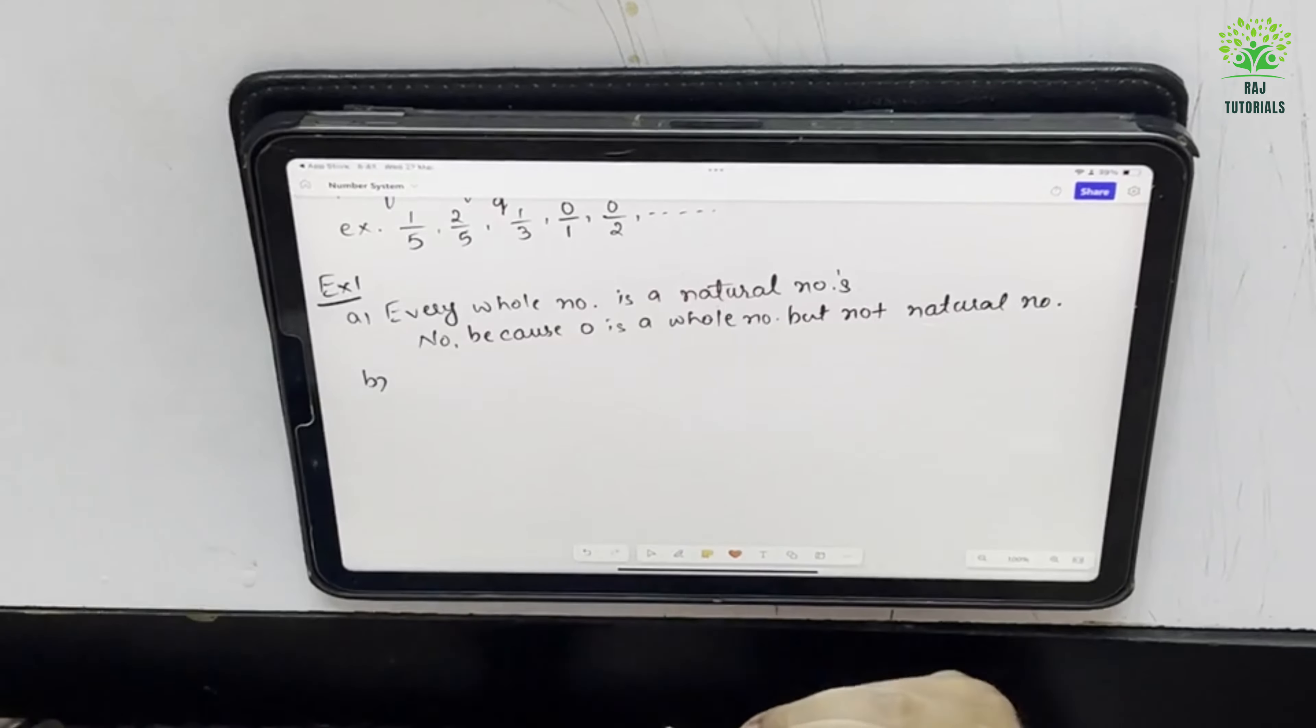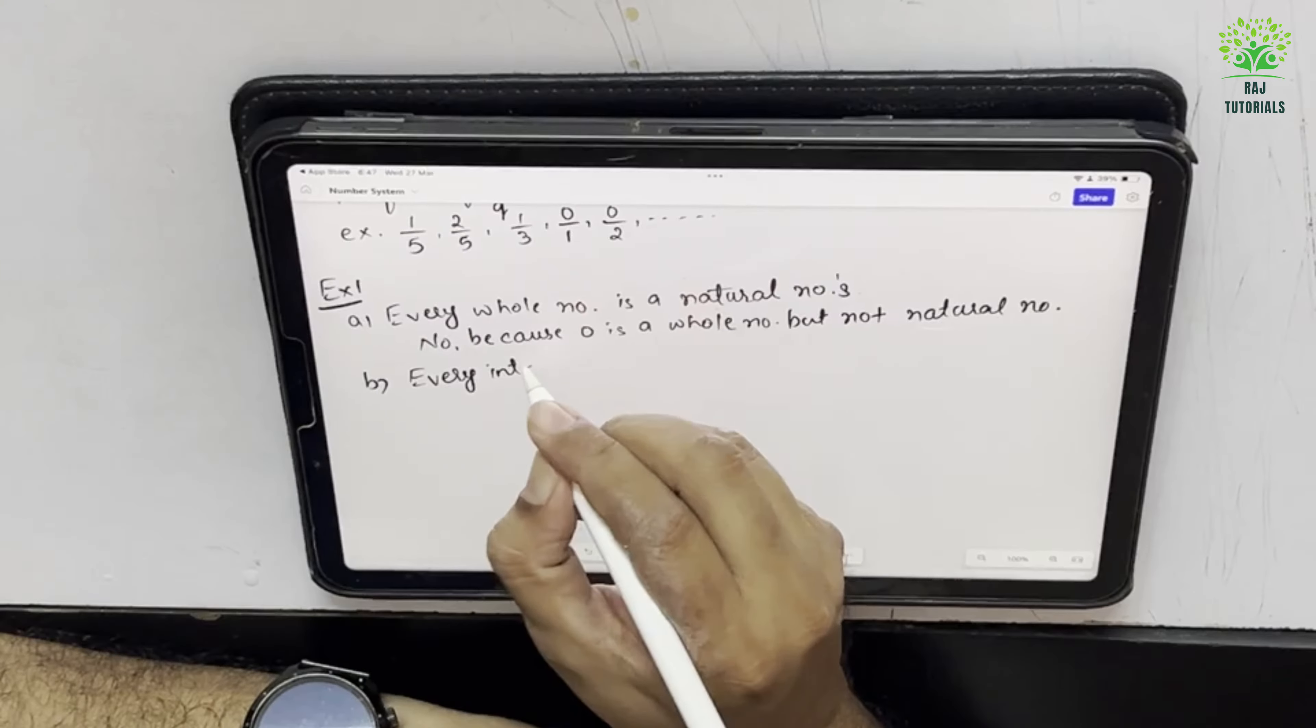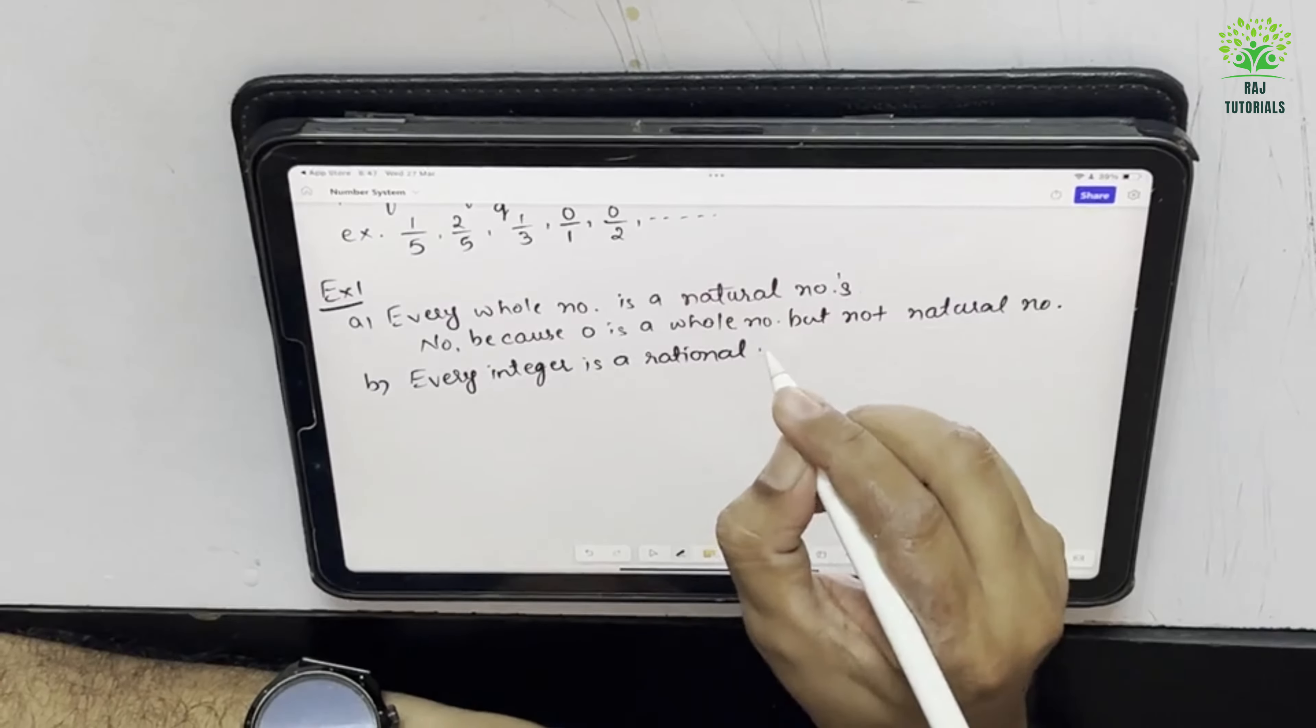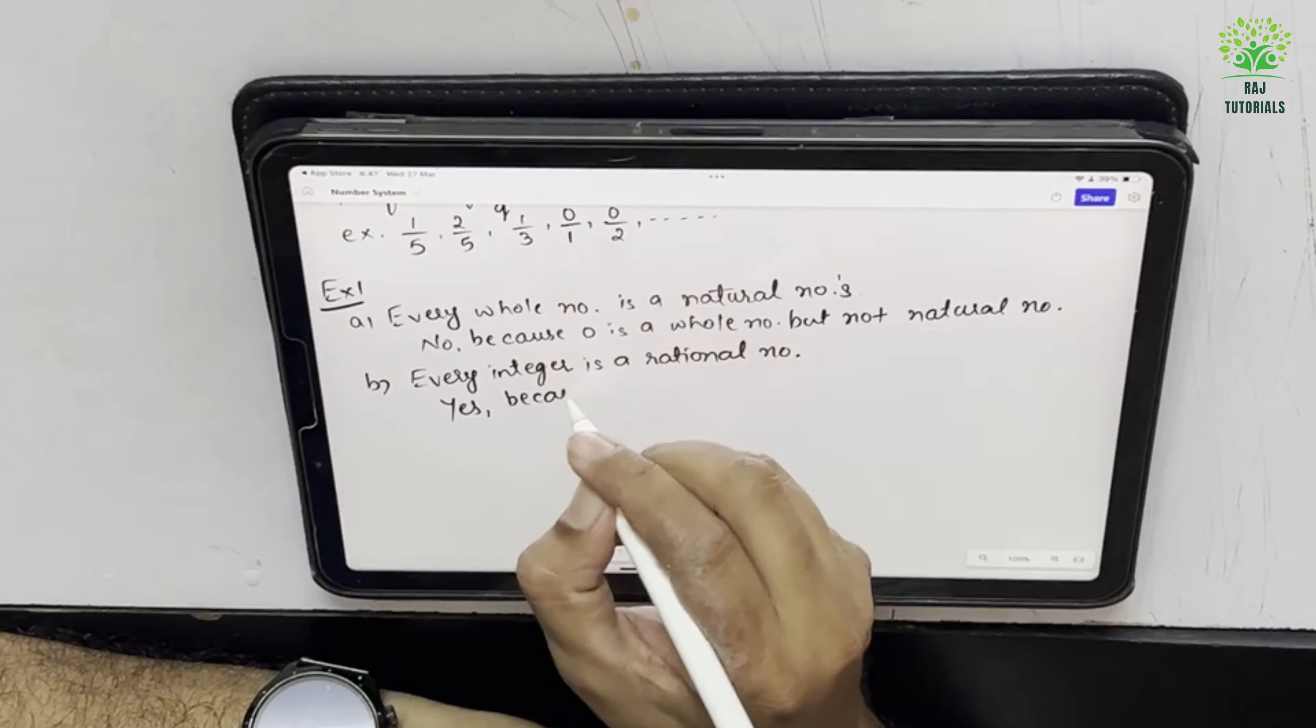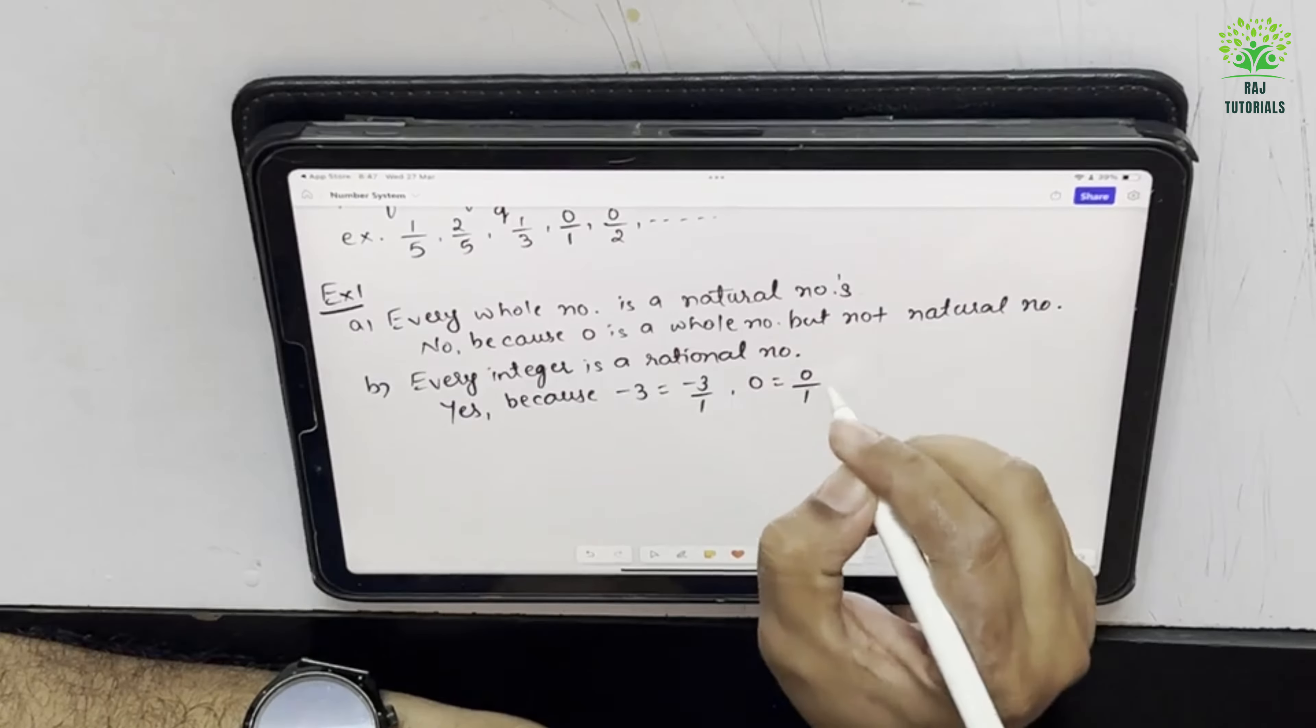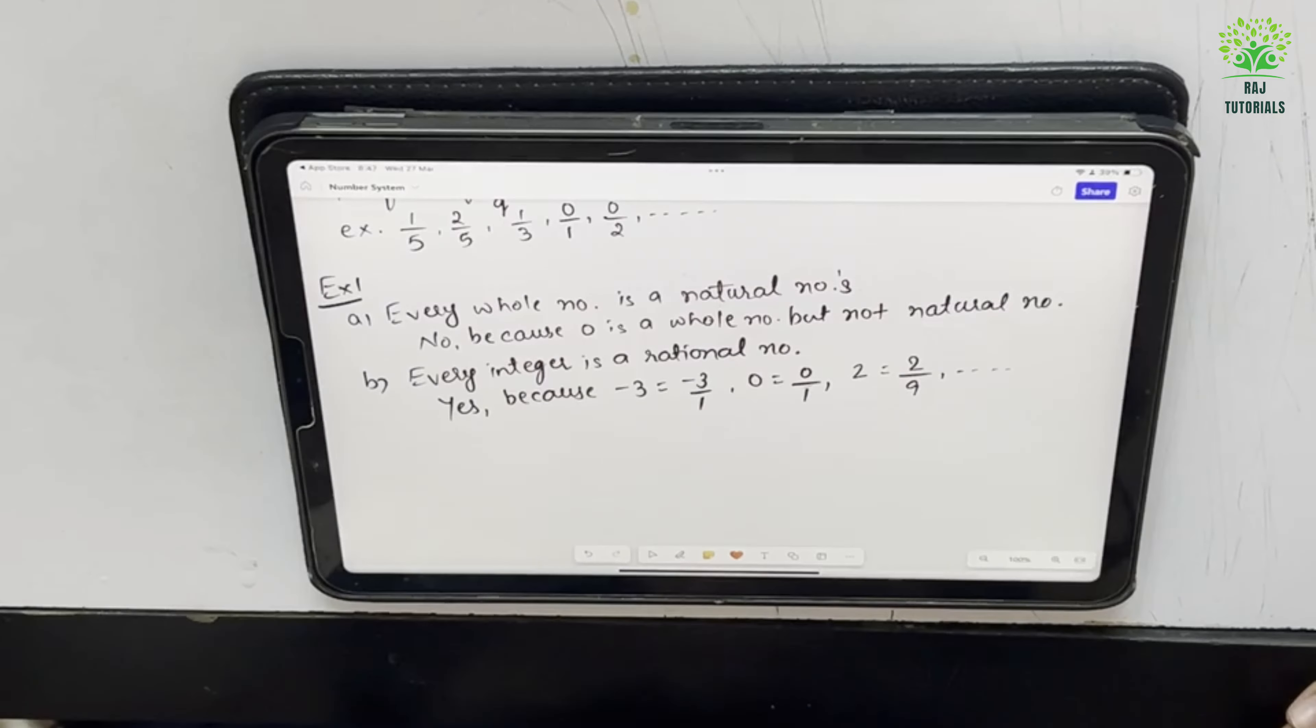Then B says every integer is a rational number. Every integer is a rational number. I can say yes because minus 3 equal to minus 3 by 1, 0 equal to 0 by 1 and 2 equal to 2 by 1 or anything like that I can write. So it is yes.